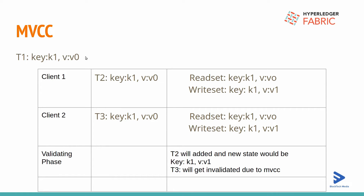Batch time means after this time a block will get created, and batch size is the number of transactions in that block. Whichever comes earlier, the block will get created. For our network, we have 10 as the block size and batch time is 2 seconds. It means if we get a single transaction in 2 seconds, the orderer will create a block even for a single transaction. Or if we get 10 transactions within a single second, the orderer will also create a block.